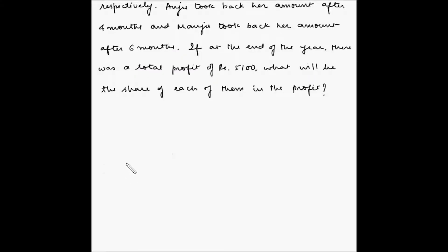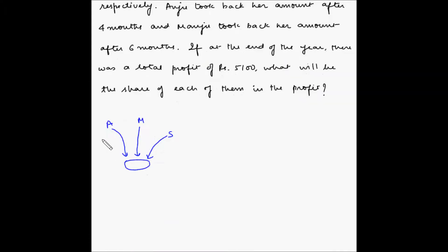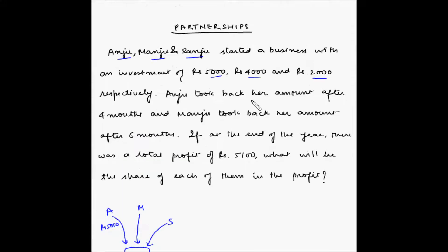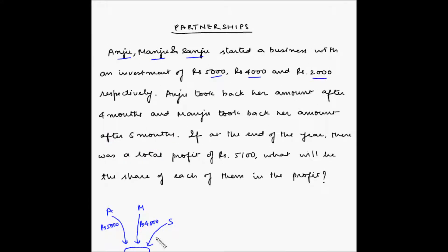So let's say this is the business entity here. Anju, Manju and Sanju invested money in this business. Anju invested rupees 5,000, Manju invested rupees 4,000 and Sanju invested rupees 2,000.